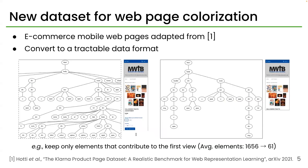We started by constructing a dataset since there is no dataset available. Our dataset is a collection of e-commerce mobile web pages adapted from an existing dataset for representation learning. Since web pages are complex and redundant, we convert them into a tractable data format, keeping only elements that contribute to the first view of a web page to reduce the number of elements.